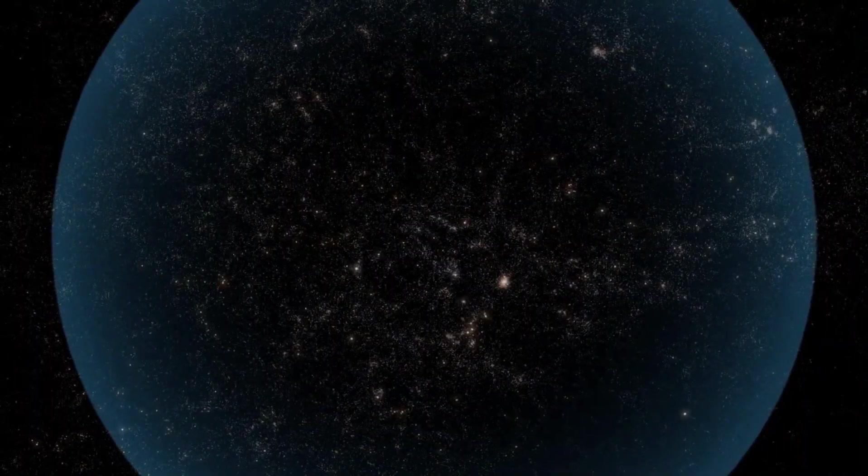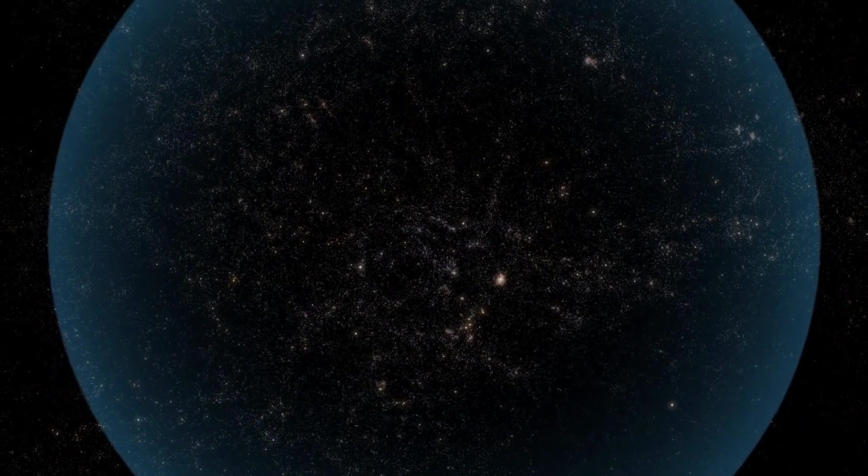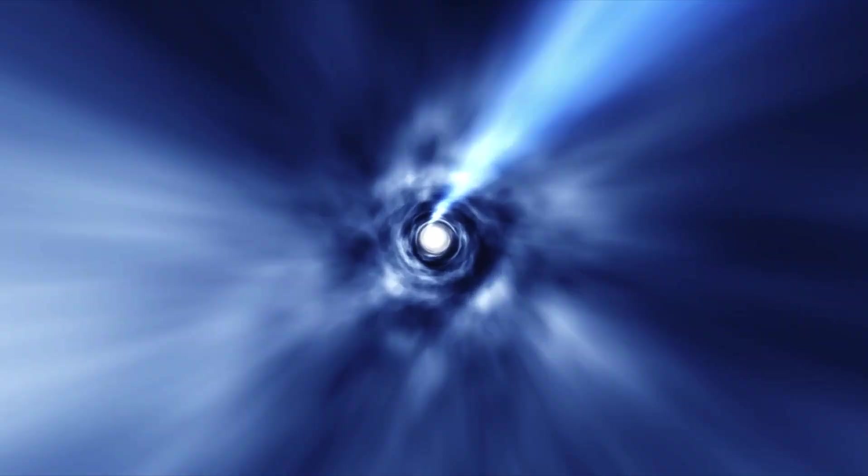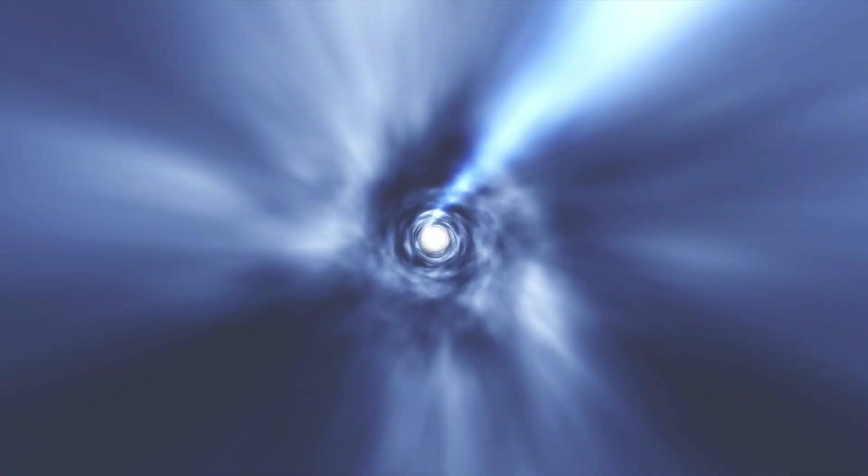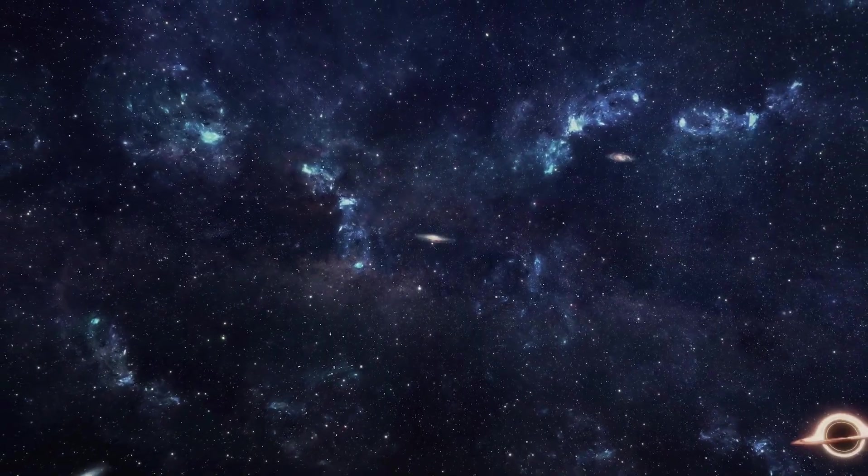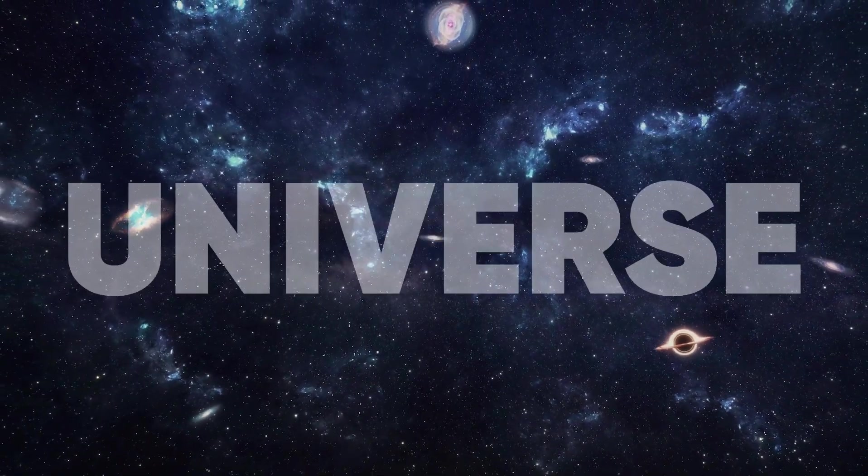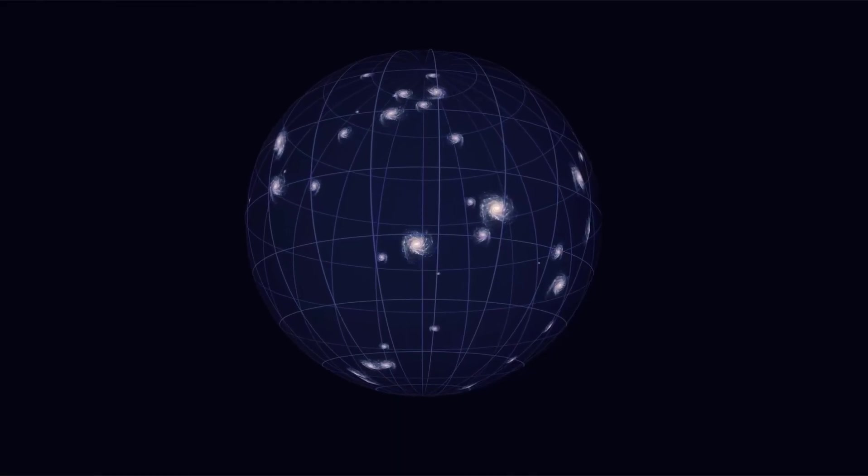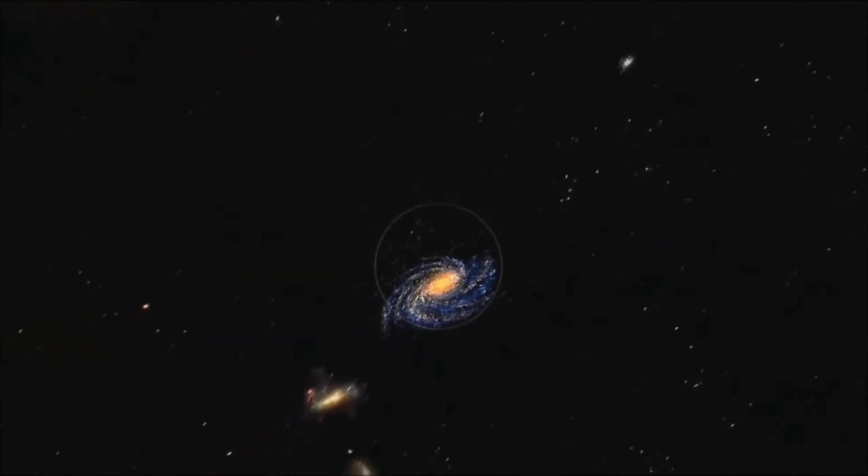The observable universe is terrifyingly big. It is estimated to be about 93 billion light-years in diameter. What this means is that if we were to travel at the speed of light, it would take us 93 billion years to reach the edge of the observable universe. However, due to the rapid expansion of the universe, the size of the observable universe is constantly changing.